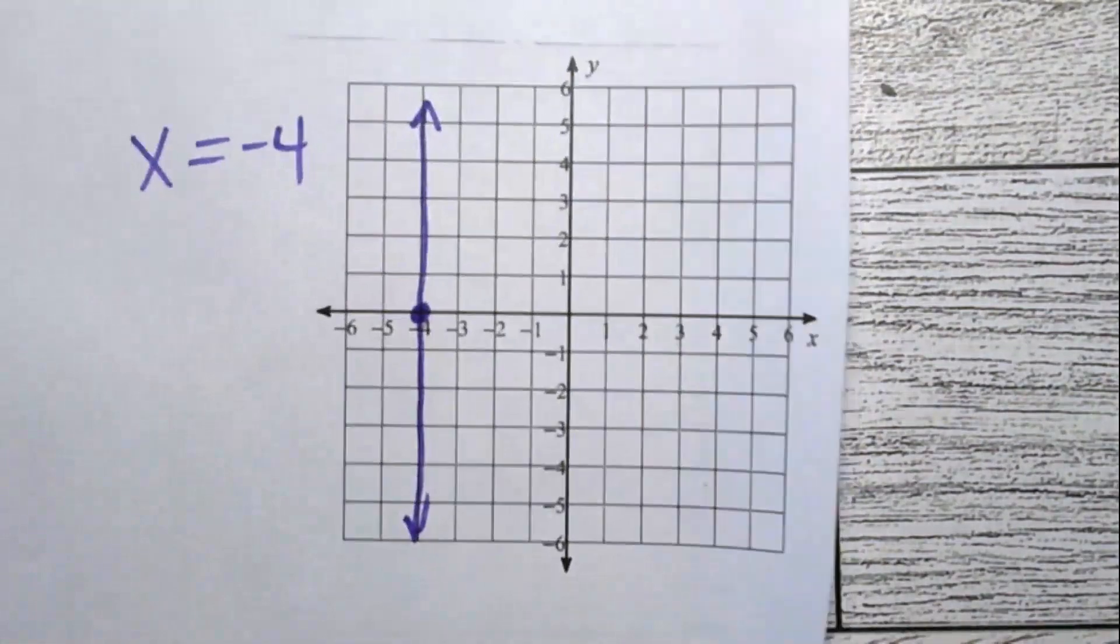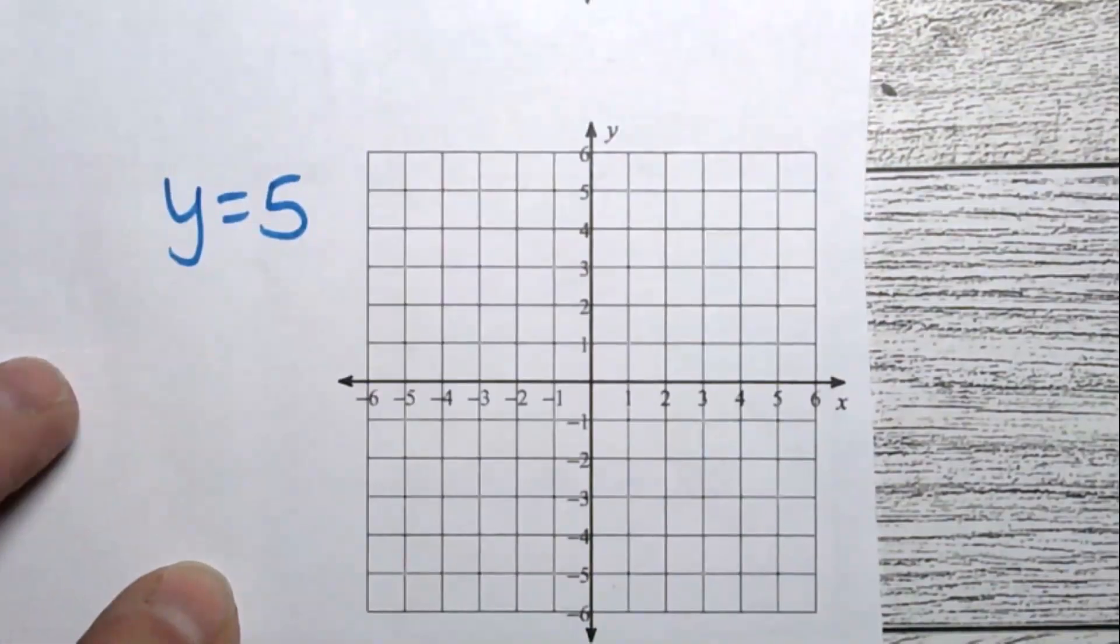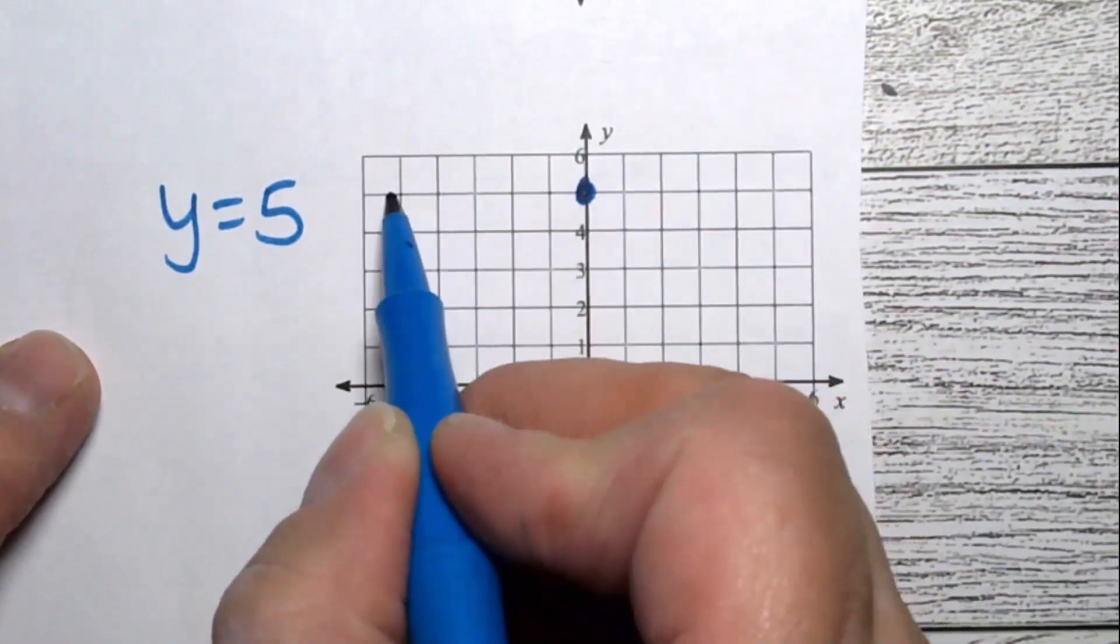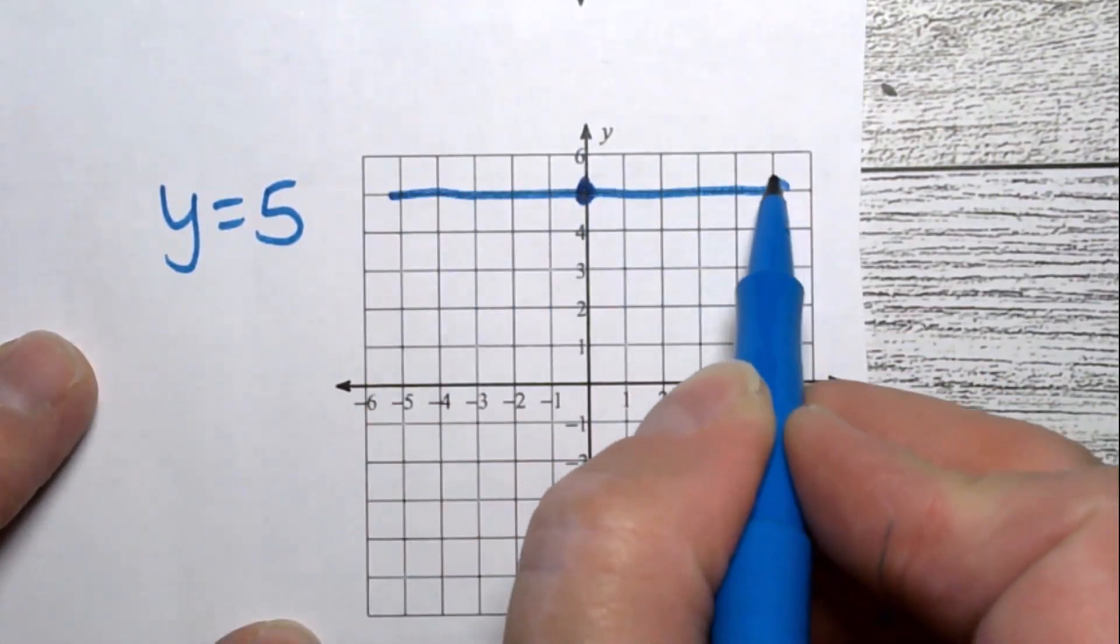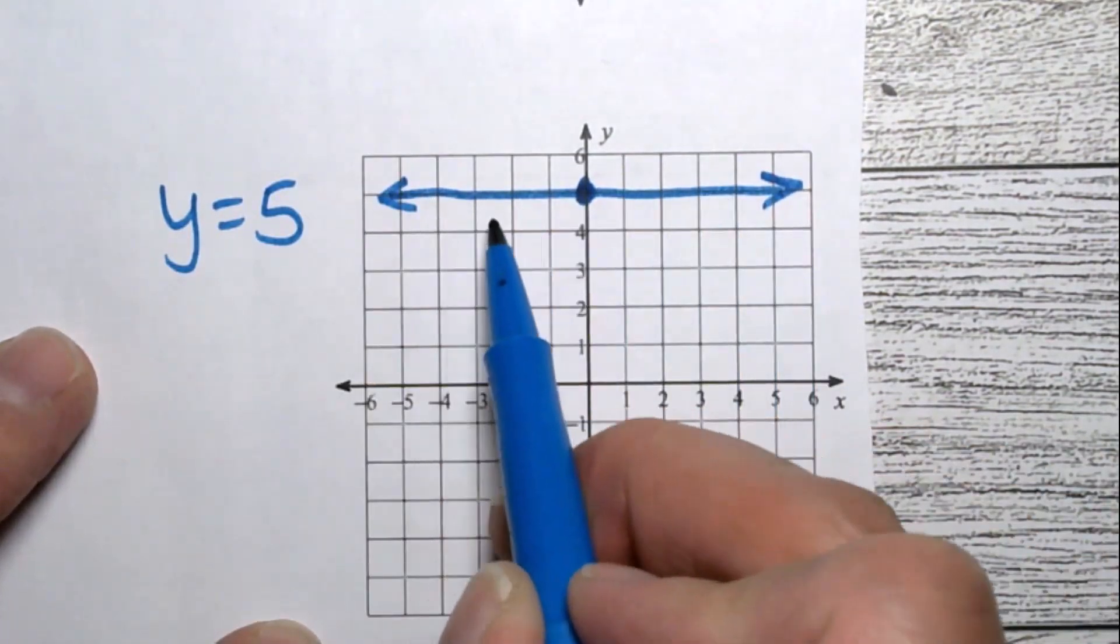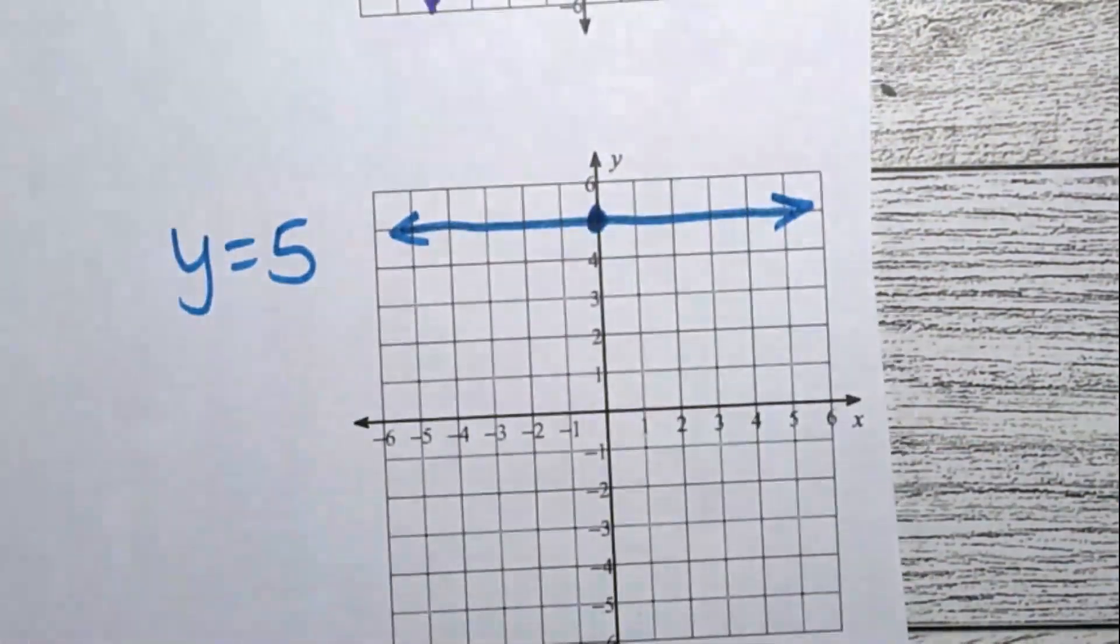y equals 5. That's right here. And that is going to be a straight line where all the y's are 5. They're held constant at that level. The x's can change. And in class, we did 6 of these. So here's the other 3.